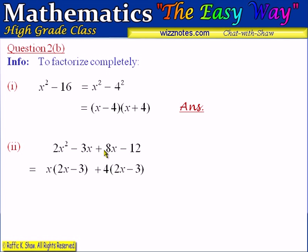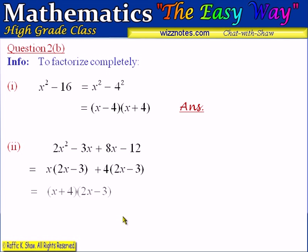Checking: plus 4 multiplied by 2x is 8x, and plus 4 multiplied by minus 3 is minus 12. So we have factorized correctly and both brackets contain the same factor. This is like saying x apples plus 4 apples equals x plus 4 apples. The final factorization is x plus 4 multiplied by 2x minus 3.